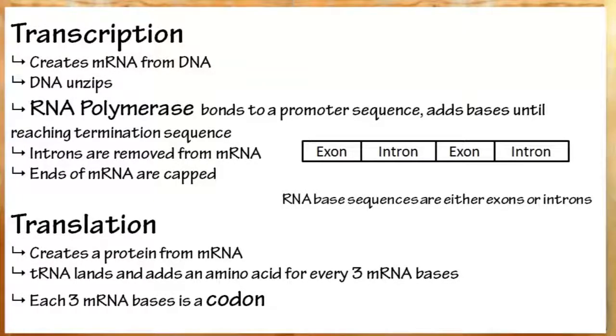Next, in translation, mRNA will have reached the ribosome. tRNA then comes along. Every three bases in mRNA is then read. And for every three bases, an amino acid is added to the growing chain that will eventually become a protein. Once the entire mRNA strand has been read, a protein will have been formed.